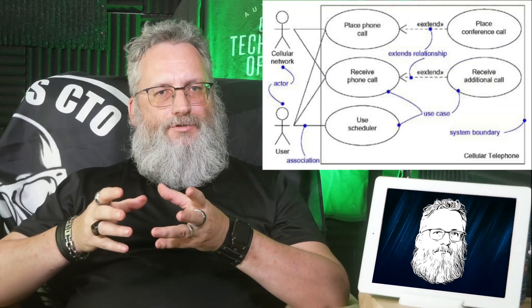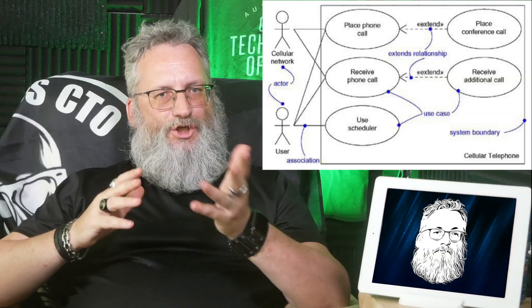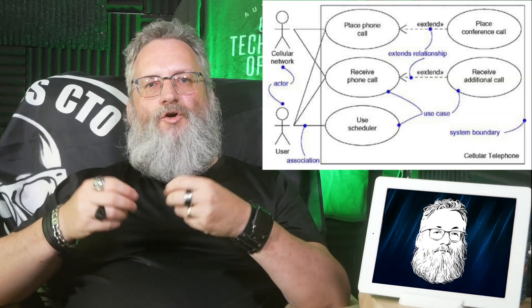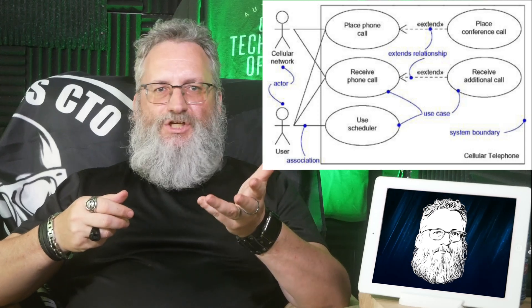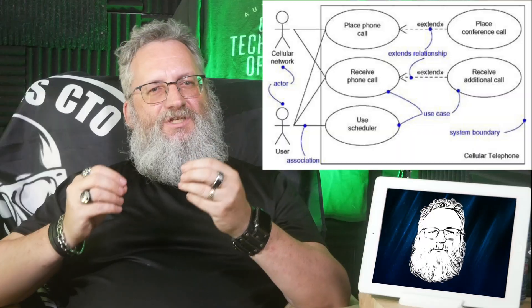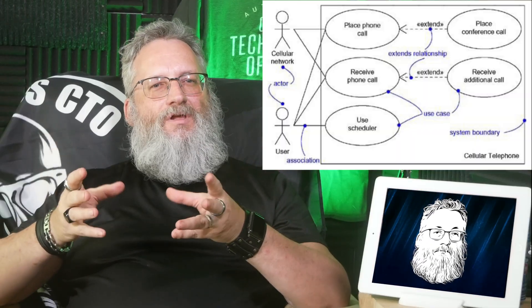Let's break it down. Actors — not specific users, but roles like customer or admin. Use cases — clear goals like 'complete purchase' or 'track order.' Relationships: associations, includes, and extends that reveal complexity. The visual spaghetti that unlocks the real conversation. Because the diagram isn't the deliverable. The discussion is.